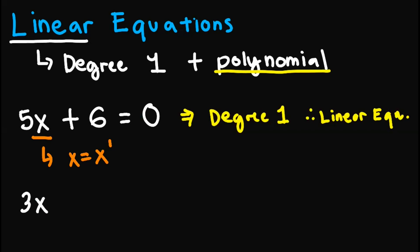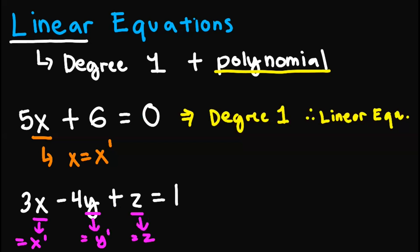Let's have 3x minus 4y plus z equals 1. We check the degree or the exponents of each variable present in this equation. We have the x variable, then the y, then the z variable. We know that x is equal to x raised to 1, y is equal to y raised to 1, and z is equal to z raised to 1. Therefore, the degree of this equation is 1 since every term has a maximum degree of 1. Therefore, this one is a linear equation.